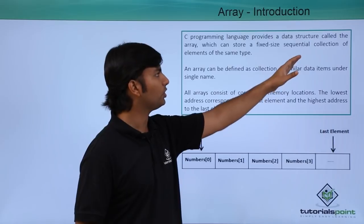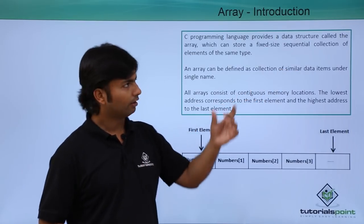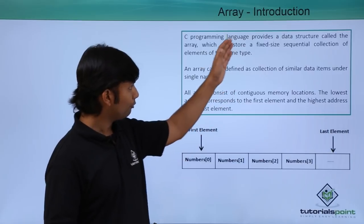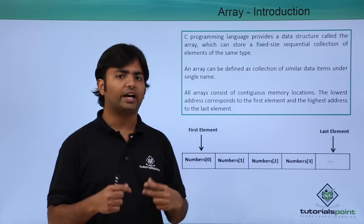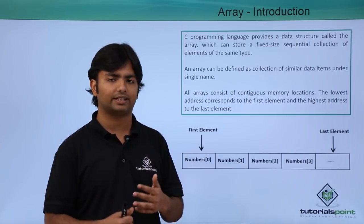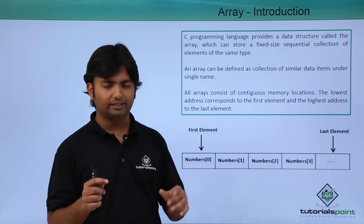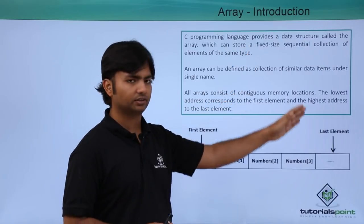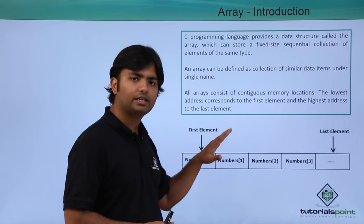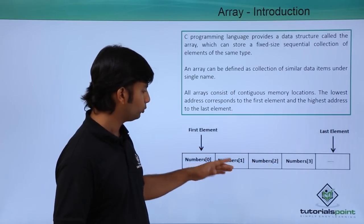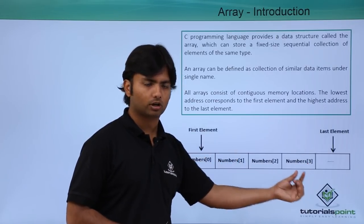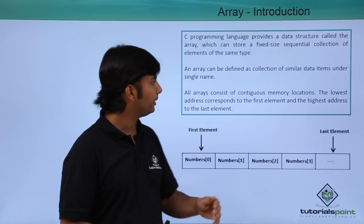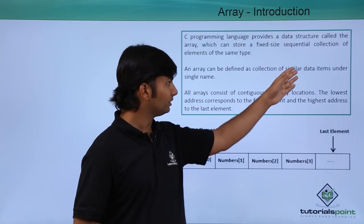An array is a data structure where we can store a fixed-size sequential collection of elements of the same type. Same type means homogeneous — if one is integer, all will be integer; if one is double, all will be double. Fixed size means once you set the size you cannot change it — if you set the size to five, you cannot put six elements inside. Sequential collection means all elements are stored in contiguous memory blocks, one after another.